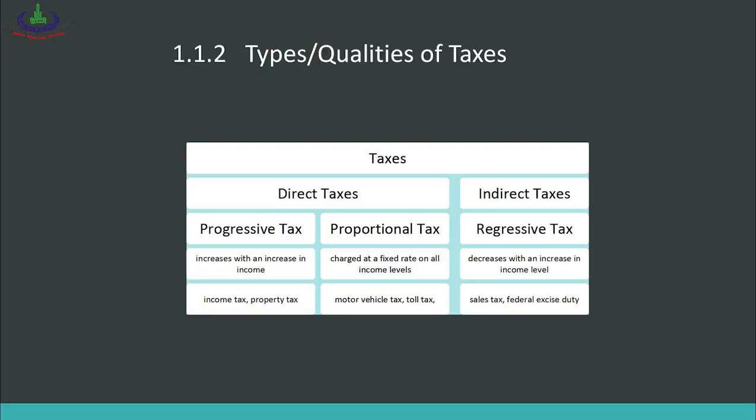With regressive taxes like sales tax, a rich person pays the same amount on a product as a poor person. So the effect of regressive tax falls more heavily on poor people and less on rich people.